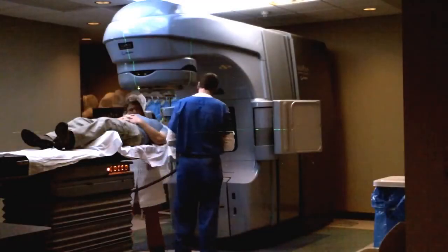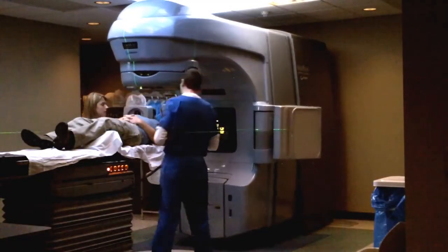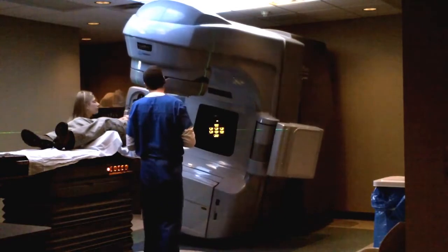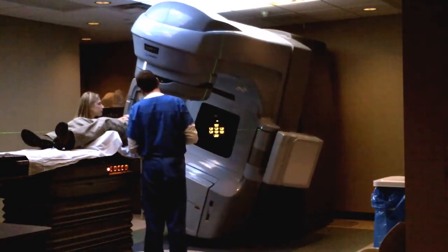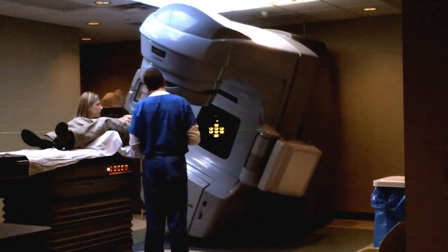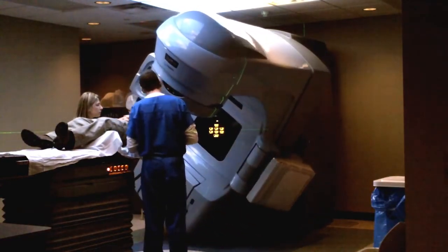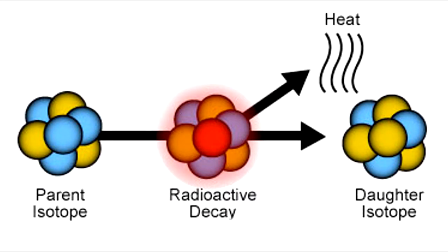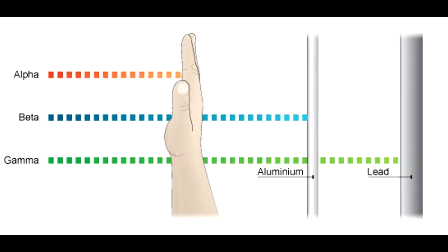Now that we know the applications of radioisotopes, you might be wondering what radioisotopes are. Radioactive isotopes, also called radioisotopes, are any of several forms of the same chemical element with different masses, whose nuclei are unstable and dissipate excess energy by spontaneously emitting radiation in the form of alpha, beta, and gamma rays.